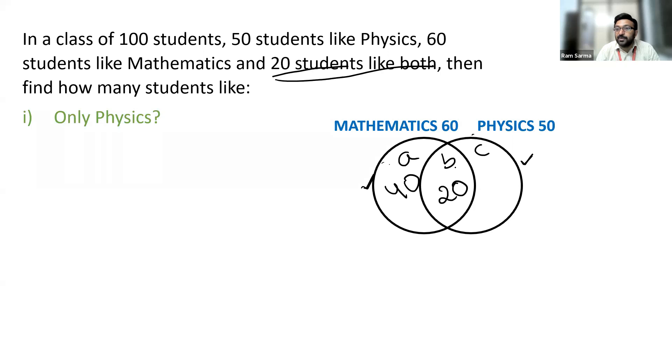B plus C is 50, among which B is 20, so C will be 30. And another important thing now, as there are 100 members in total that should be considered as Mu. Mu is nothing but the universal set. So Mu is equal to 100.